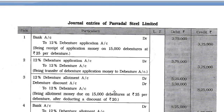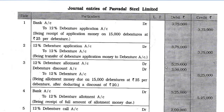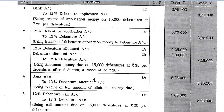Journal entries of Paswadal St. Ltd. Entry 1: Bank account debit Rs. 3,75,000 to 9% Debenture Application account Rs. 3,75,000 — being receipt of application money on 15,000 debentures at Rs. 25 per debenture. Entry 2: 9% Debenture Application account debit Rs. 3,75,000 to 9% Debenture account Rs. 3,75,000 — being transfer of application money. Entry 3: 9% Debenture Allotment account debit Rs. 5,25,000 and Debenture Discount account debit Rs. 3,00,000 to 9% Debenture account Rs. 8,25,000.